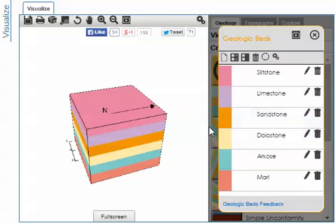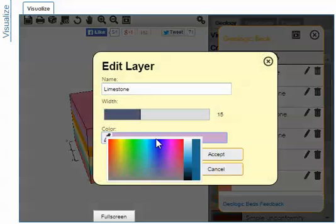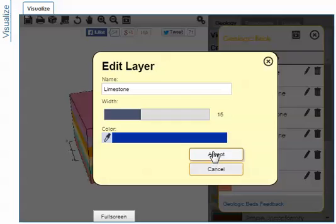They can be edited by clicking the Bed button, choosing the pencil of the layer you want to adjust, changing parameters, and accepting.